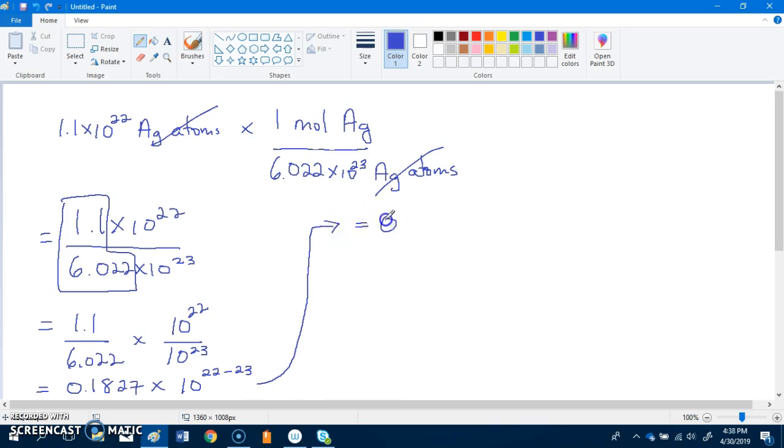What that equals is 0.1827 times 10 to the negative 1. This is your answer, but it's not in proper scientific notation. The reason why it's not proper is because there's a zero in front of this decimal place, and in proper scientific notation you have to have a number that's greater than zero here.